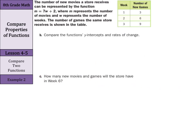The number of new movies a store receives can be represented by the function m equals 7w plus 2, where m represents the number of movies and w represents the number of weeks. The number of games the same store receives is shown in the table. Compare the y-intercepts and rates of change of these functions. Well, let's deal with the movies part first. And with the movies, we have the equation m equals 7w plus 2.